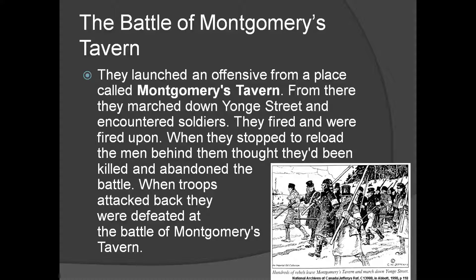We're not talking about Gettysburg and the Civil War, or the American Revolution, or the French Revolution, or Napoleon and Waterloo — our battles are not that big. But those that we have are kind of interesting. So we've got William Lyon Mackenzie. The idea is they're going to march from Montgomery's Tavern and go down Yonge Street — which, if you've ever been to Toronto, you've probably heard of. Along the way, they do encounter some remaining soldiers, and they fire at the soldiers, and the soldiers fire back.